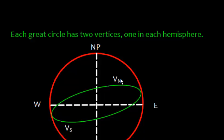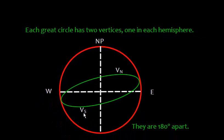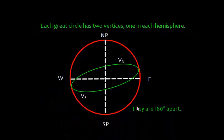Each great circle will have two vertices. One vertex in the northern hemisphere and one vertex will be in the southern hemisphere. Both these vertices will be 180 degrees apart.